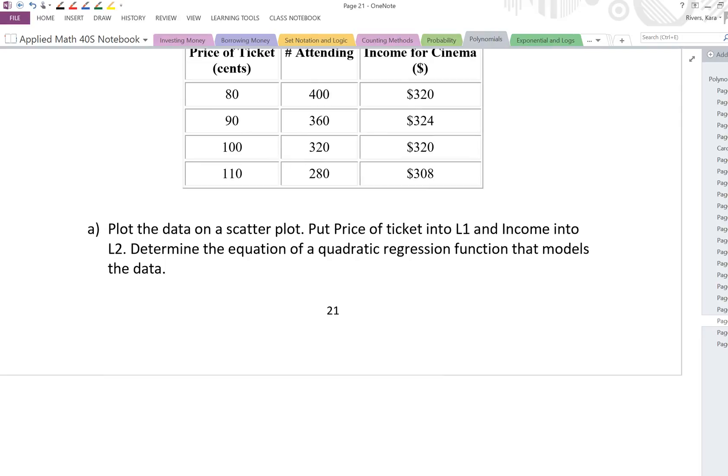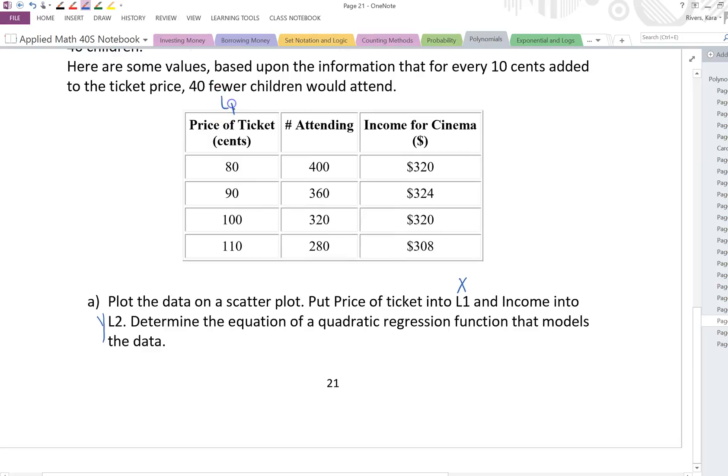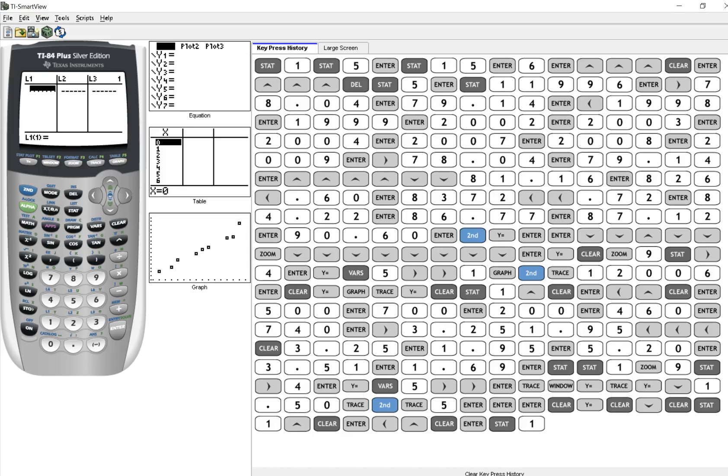Let's look at A. It says plot the data on a scatter plot. Put price of ticket into L1, so they're telling us that that's our X, and the income into L2, that's our Y. So we're looking at the relationship between the price and the income. We could have also asked for the attending against the income, but if you look at the price of the tickets against the attending, that's just a linear function. You'll get a straight line graph, so we don't want to do that. So let's go ahead and put this in our calculator.